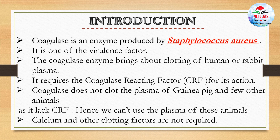It is one of the virulence factors. The coagulase enzyme brings about clotting of human or rabbit plasma. It requires the coagulase-reacting factor, CRF, for its action. Coagulase does not clot the plasma of guinea pigs and a few other animals as it lacks CRF, hence we cannot use the plasma of these animals. Calcium and other clotting factors are not required.